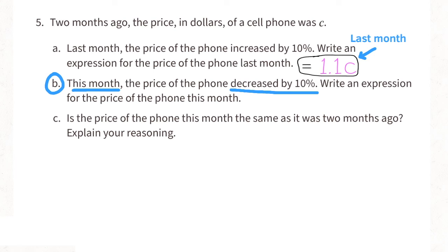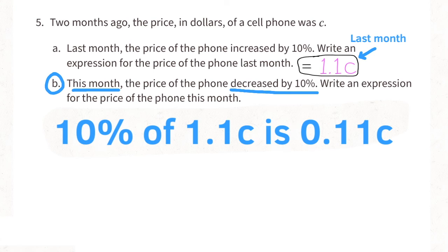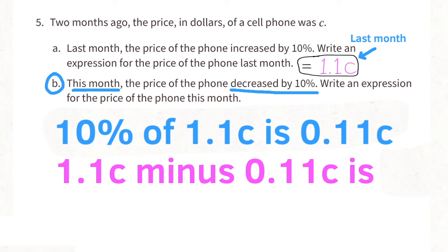That's 1.1C. And then we need to subtract 10% of 1.1C. Since 10% of 1.1C is 0.11C, then we can write the expression 1.1C minus 0.11C.